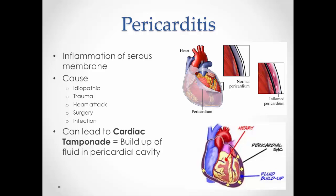If pericarditis gets severe enough, it can lead to cardiac tamponade — a buildup of fluid in the pericardial cavity that compresses the heart and decreases its function. To treat it, a syringe must be inserted to drain off the fluid. This was depicted in Grey's Anatomy when a character suffered a cardiac tamponade after a plane crash and required a tube in the chest to drain the pericardial sac.